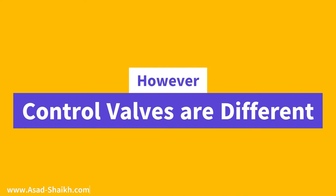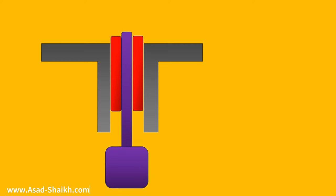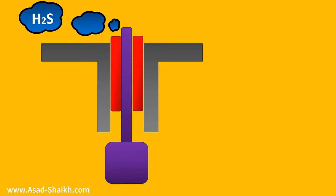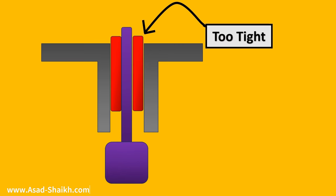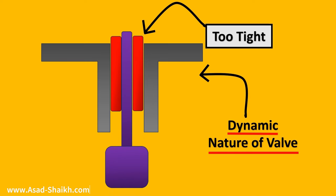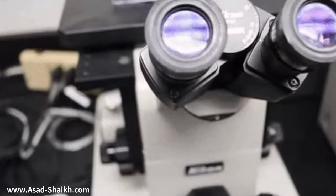Let us take the example of a control valve. A control valve is continuously moving in the plant, so even though fugitive emissions are coming out, you cannot make it too tight. Why? Because if you make it too tight, the control valve will not be able to move. This is the dynamic nature of the valve, which makes it an engineering problem to be solved.